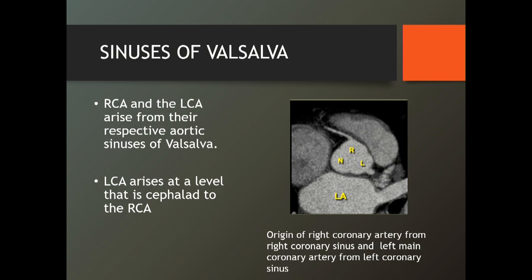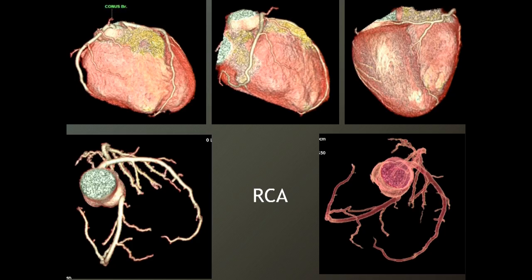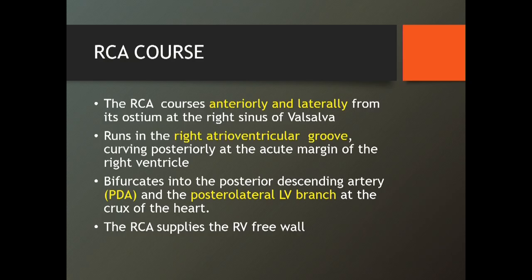The origin of the right coronary from the right coronary sinus and the left main coronary from the left coronary sinus — that's the standard, that's what's normal. You have to get used to looking at the normal. The RCA courses anteriorly and laterally from the ostium at the right sinus of Valsalva, going into the right atrioventricular groove, between the groove between the atria and ventricle. It curves posteriorly at the acute margin of the right ventricle, then bifurcates into the posterior descending artery — PDA — and the posterior lateral branch.